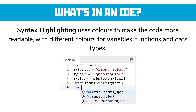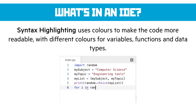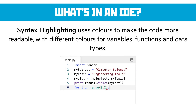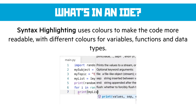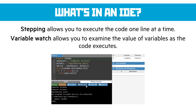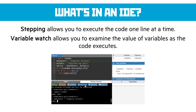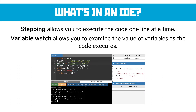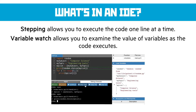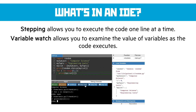Syntax highlighting uses different colors for different parts of the syntax. Variables, functions, and data types are often color coded differently to make it clear what's going on — for instance, the range function is in green and strings are in red. Stepping, which some of you may not have used, is a really useful way of running through your code one line at a time. You'll also see on the right hand side that variable watch shows us the value of those variables at each step and how they are changing, making it really easy to interrogate that code and work out what's actually going on.